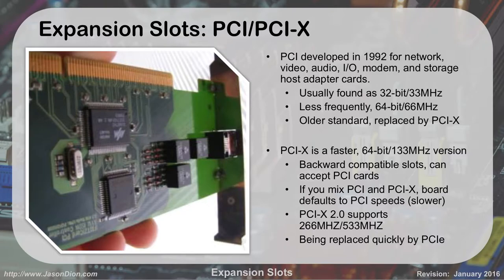Less frequently, they actually had 64-bit, which would operate at a whopping 66 MHz. It was an older standard and has been pretty much replaced by PCI-X. PCI-X is a faster system — it is 64-bit and 133 MHz, which is still very slow compared to the processor, but when we get further from the processor, you're going to see speed start slowing down significantly. The nice thing about PCI-X is it's backwards compatible, so you can take those old cards from a 1990s machine and pop them into a PCI-X slot and still let them work today.